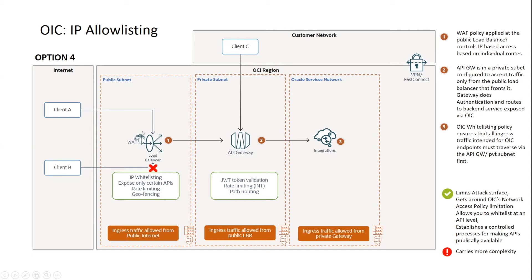The load balancer will forward traffic to the API gateway, which can still do what it does best, such as authentication. It can then path-route back to OIC endpoints. From a network point of view, OIC is configured to only accept traffic from the API gateway, and the API gateway is configured to only accept traffic from the load balancer.